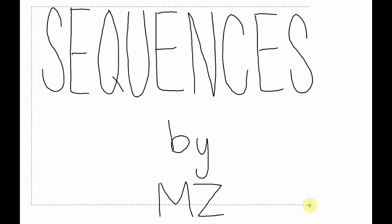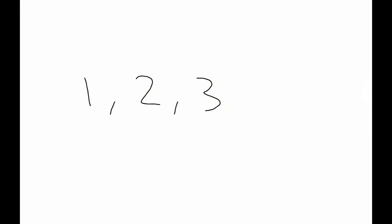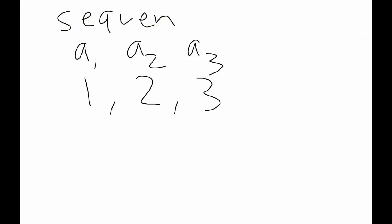Introduction to sequences in calculus. The definition of a sequence is a set of numbers or terms like 1, 2, and 3. The first term is called A1, the second term is called A2, and the third term is called A3. This is known as a sequence. The whole sequence is referred to as AN, so if you want to refer to the whole sequence, you call it AN.